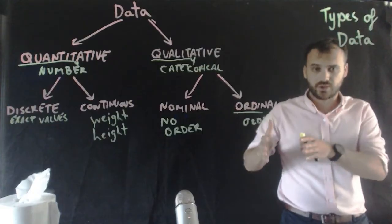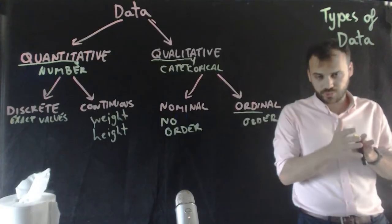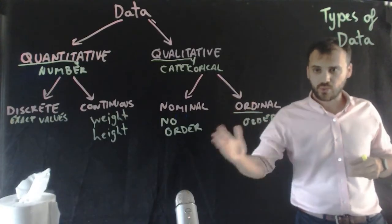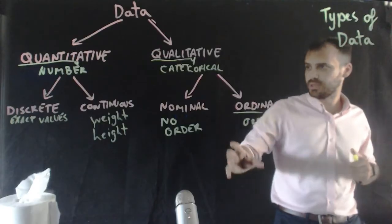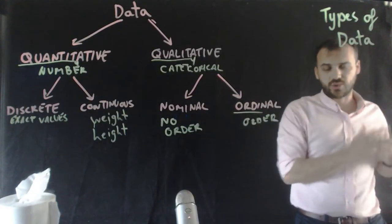You're a private, and then you're a lance corporal, and then you're a corporal, and then you're a sergeant, and then you're a staff sergeant. This is an order. Now, it might not be numerical data, but it definitely has a distinct order to it.